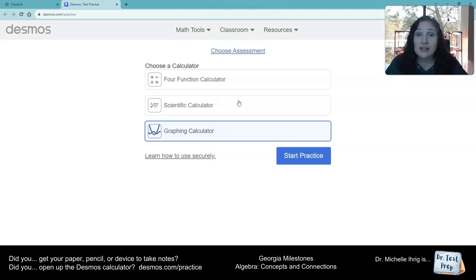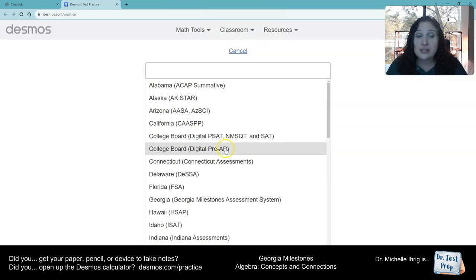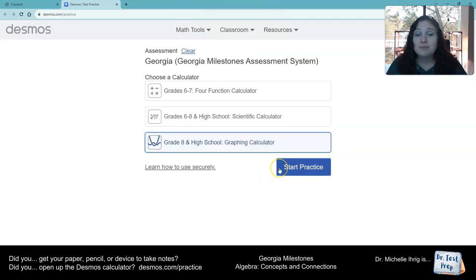If you want to be super fancy, you can click choose assessment and go down to Georgia. And then this will be the actual perfect examples of what you'll see. But the practice calculator is definitely good enough. The cool thing is for the algebra test, you have access to both the scientific and the graphing calculator which is going to help you with a lot of the questions.